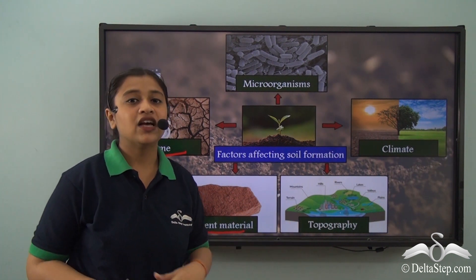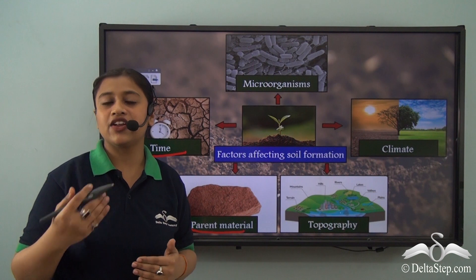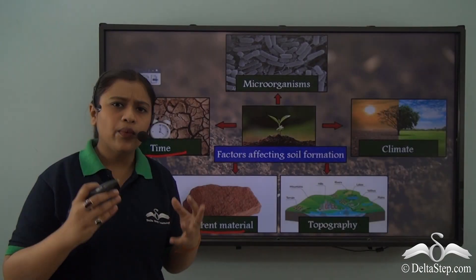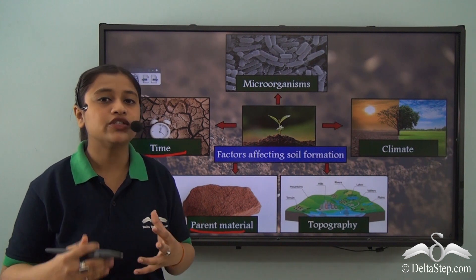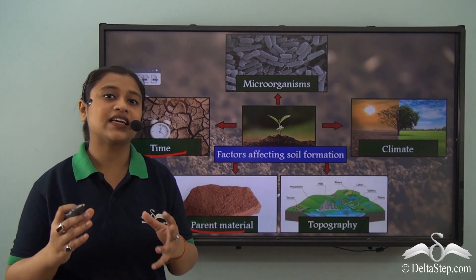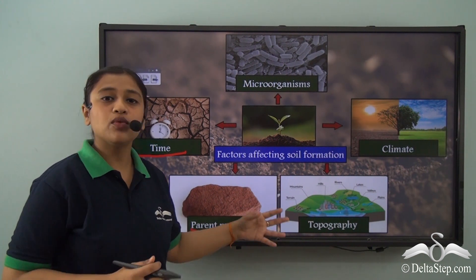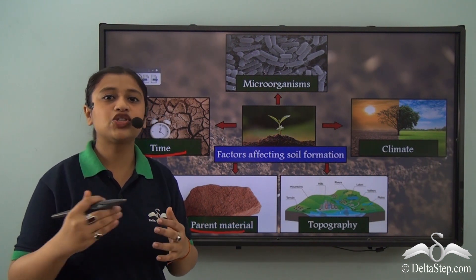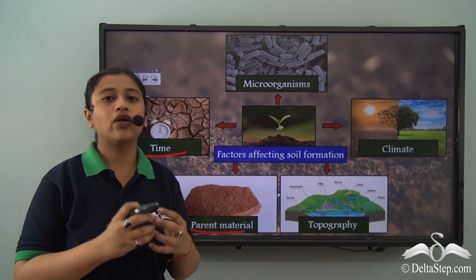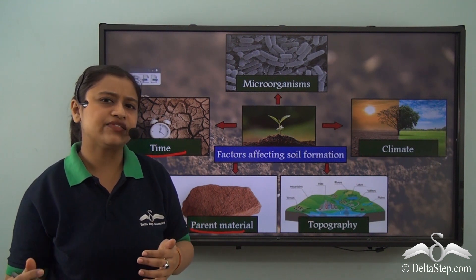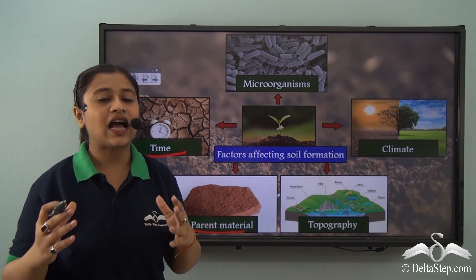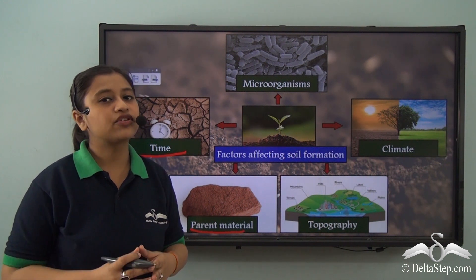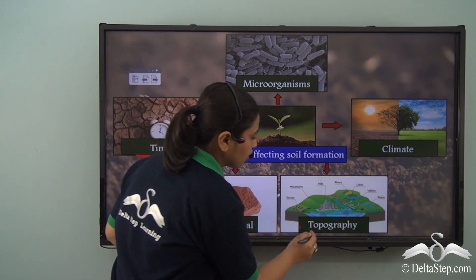Another factor is topography — where the weathering of the parent rock takes place is also important. Where the soil is being formed or deposited must be taken into account. Soil differs with topography; the soil on a hill slope may be very different from that on flat, alluvial, or fertile land.